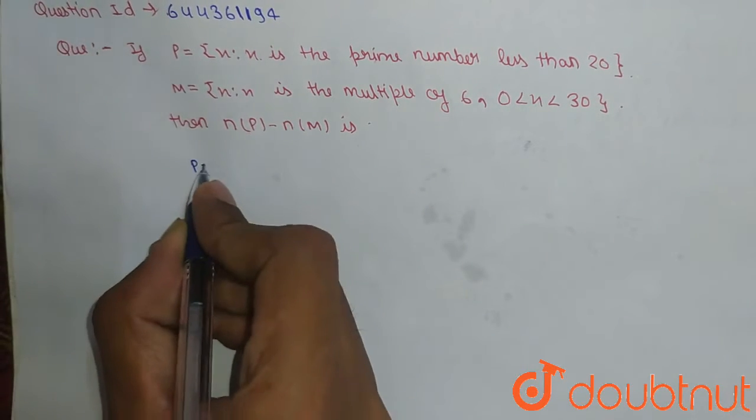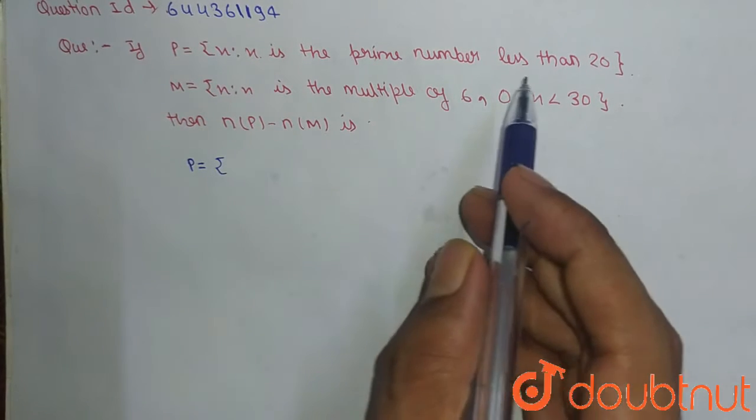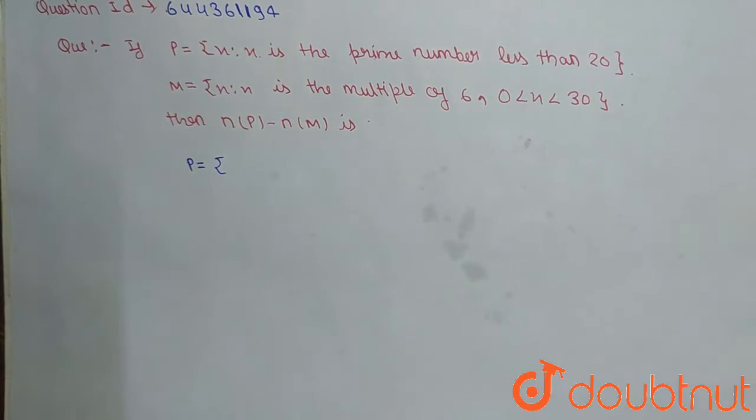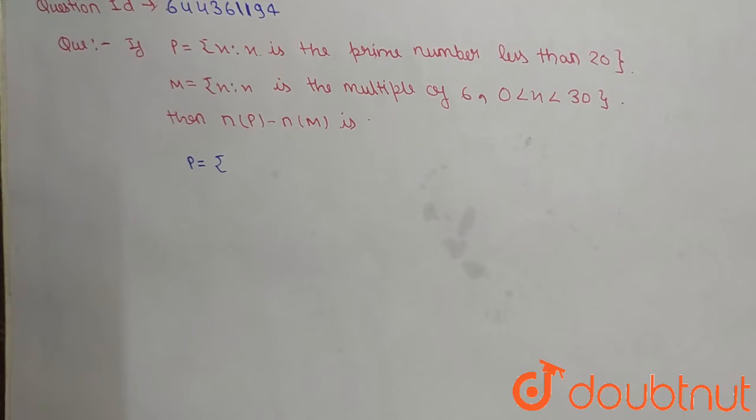So firstly, we have to make the set P. We have given X such that X is a prime number less than 20. So firstly, we have to know what do you mean by prime number. The prime numbers are the numbers which are divisible by 1 and itself only. As we know that 1 is neither composite nor prime.